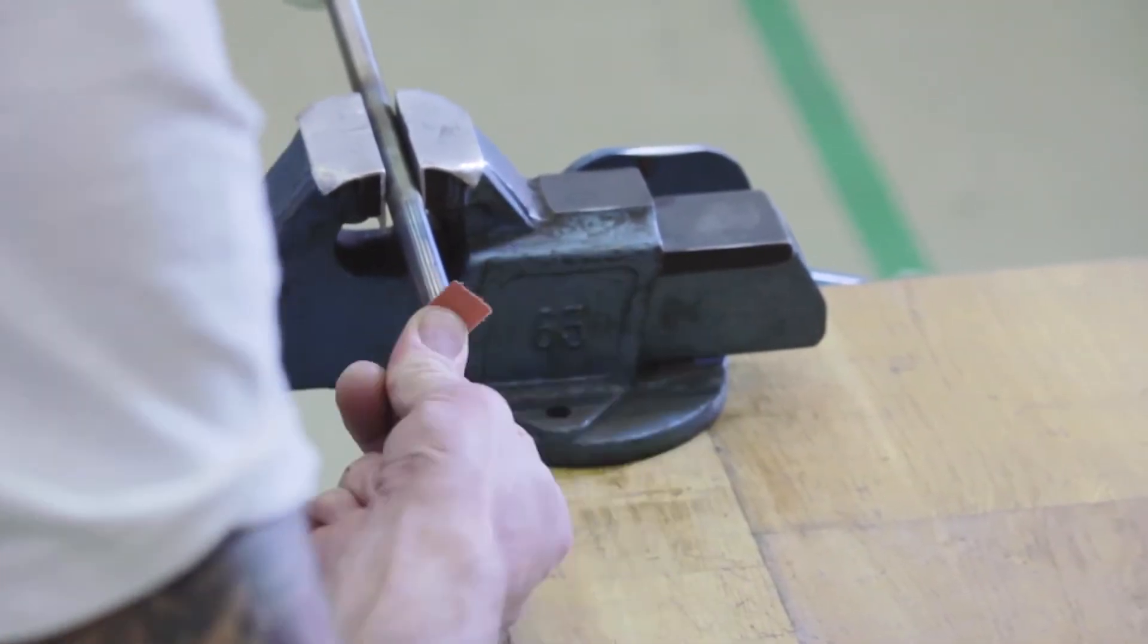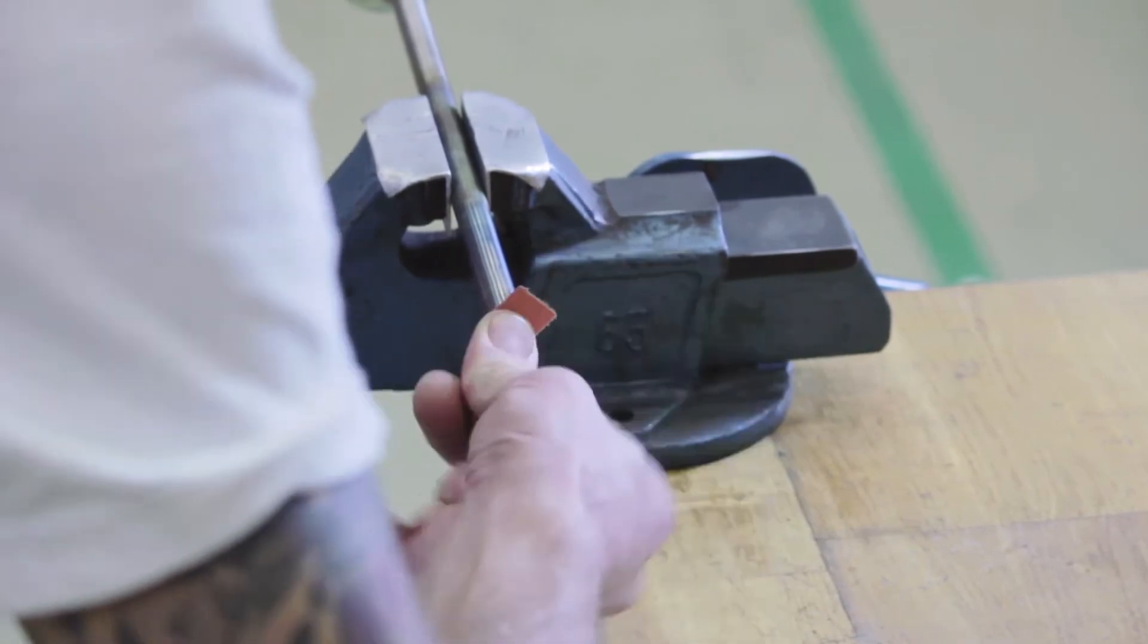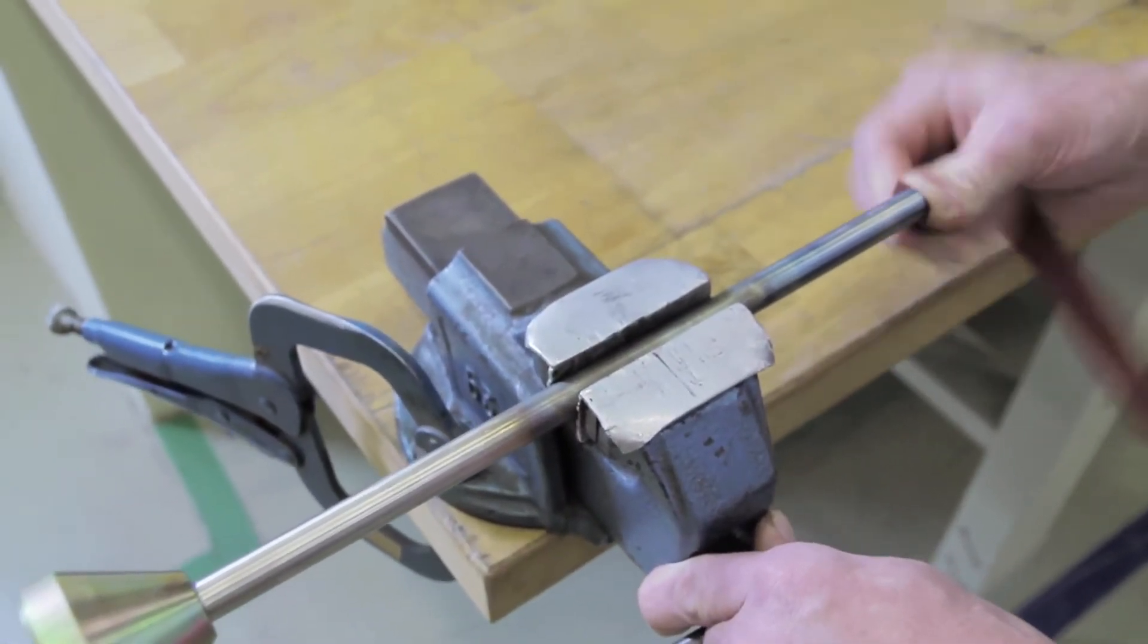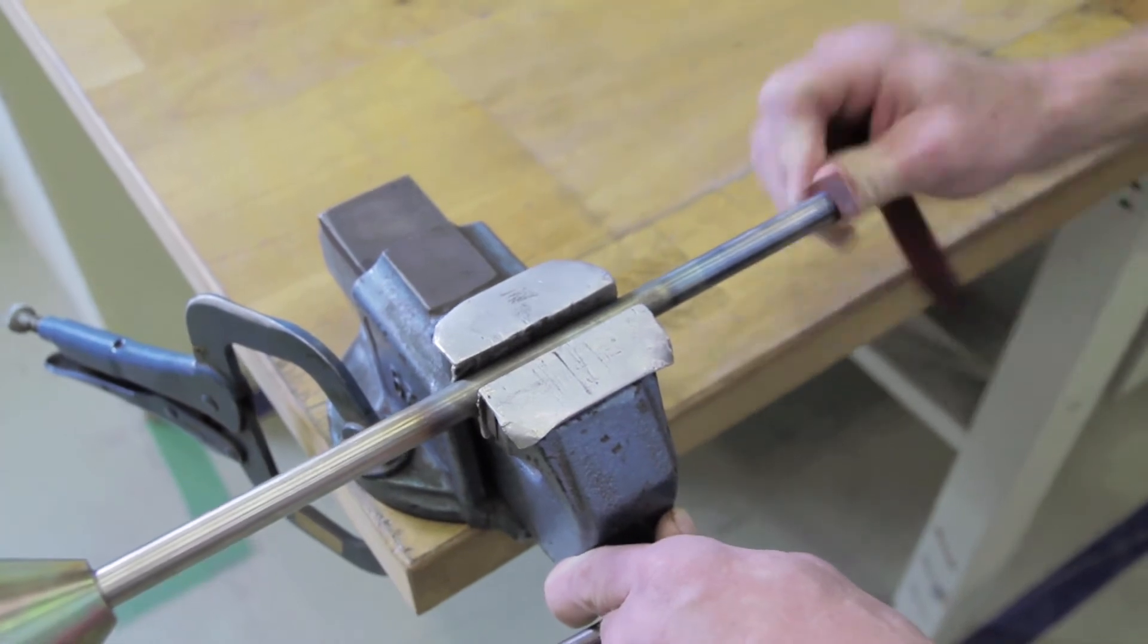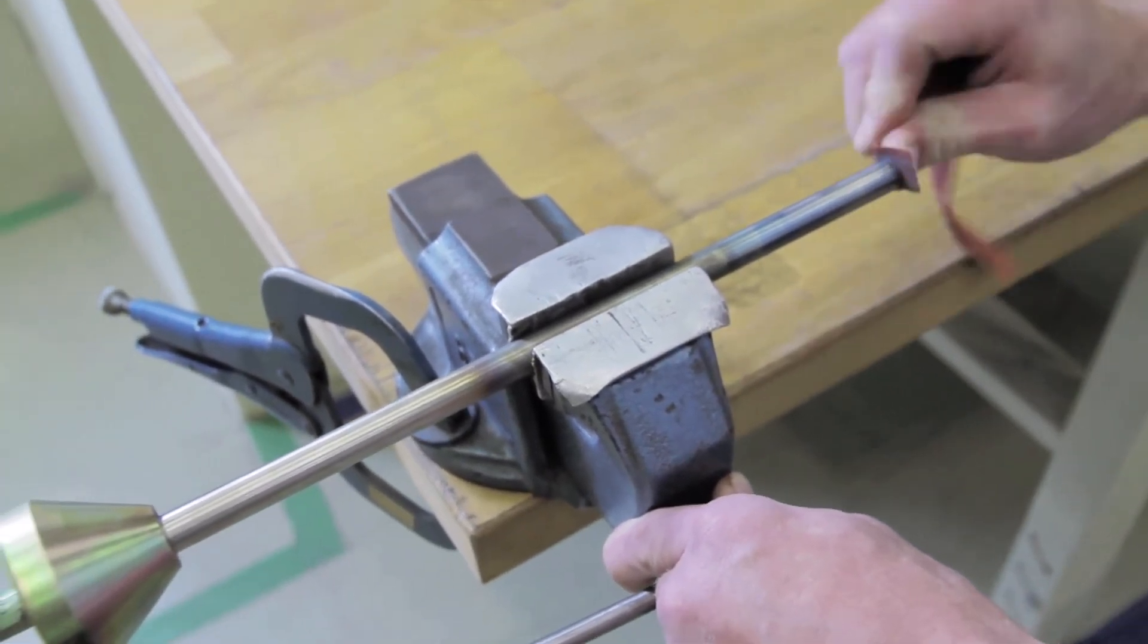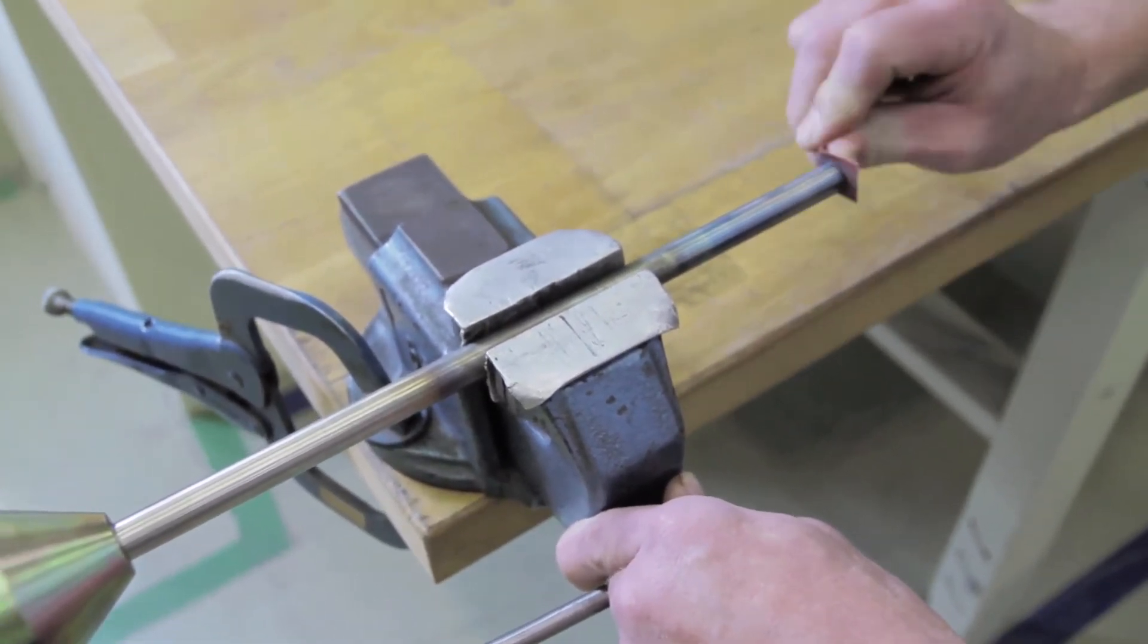Emery paper with grit size 320 is sufficient to remove the oxide but still fine enough not to reduce the probe diameter too fast. Be gentle to the edge and try to just grind the sectional surface.